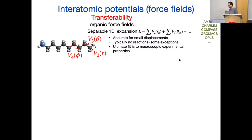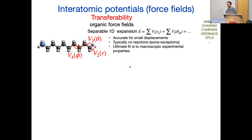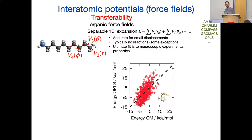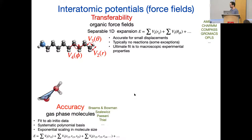One could argue the Nobel Prize given a couple of years ago, ostensibly for QM/MM hybrid calculations, was really given because of biomolecular modeling in general on the atomic scale. This is very big business, but it's not very accurate. Here's a plot of this small molecule — these are energies of its various conformations — and the quantum energies versus the empirical model energies show yes, there is a trend, but it's really not that good. These models are very transferable though — you fit once with a few parameters and use them forever.